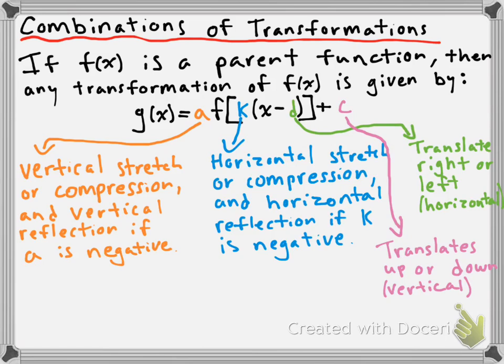So this is combining all the different transformations into one big equation. Note that this equation is written in function notation. In class, we're going to talk about switching between function notation for a transformation and the actual equation of the function, because there's a difference — function notation alone doesn't tell you if you're dealing with a quadratic or a square root function that's been transformed. But once you know which parent function you're working with, you can write the actual equation. We'll talk about that tomorrow. Take care, guys.